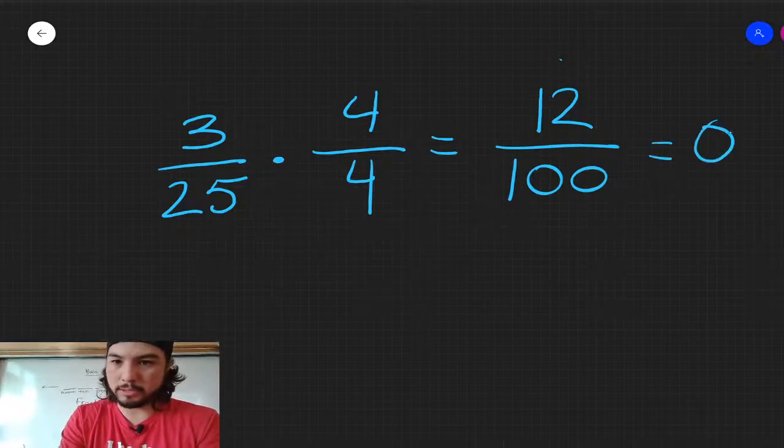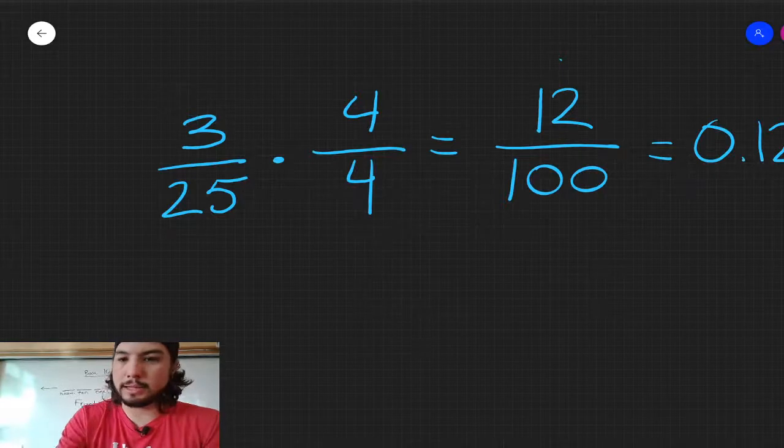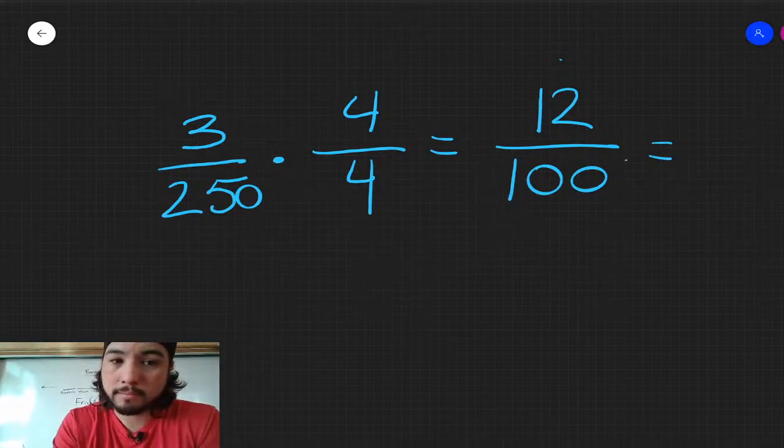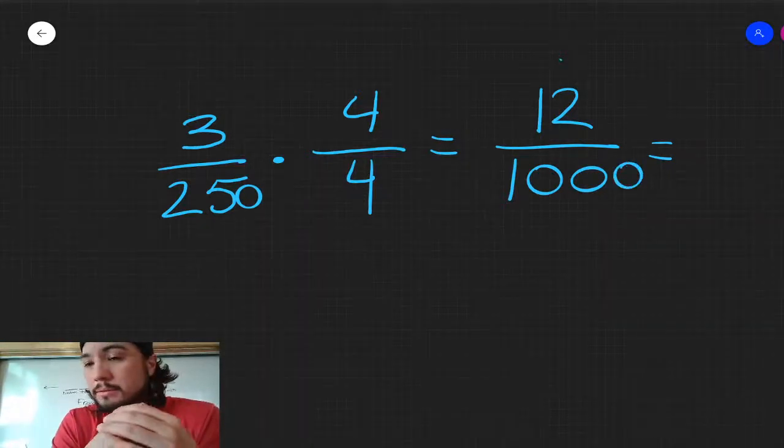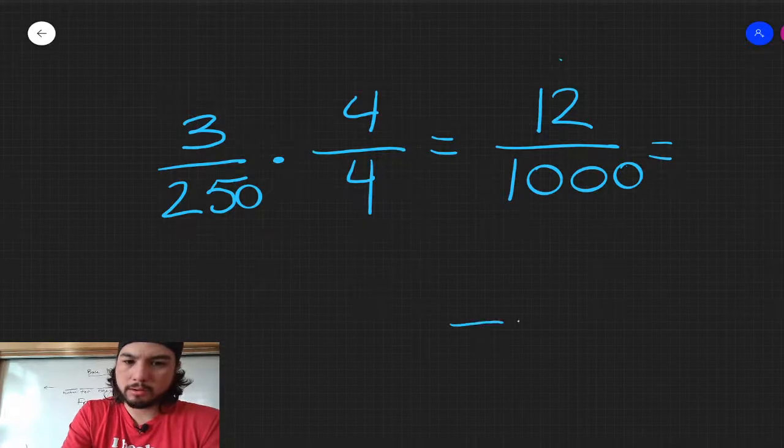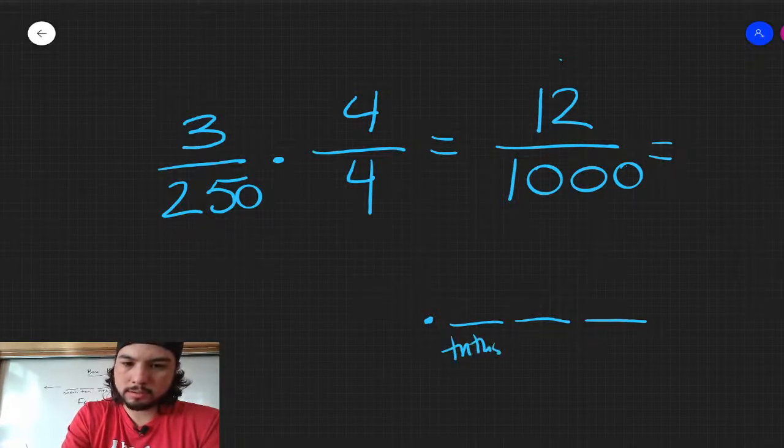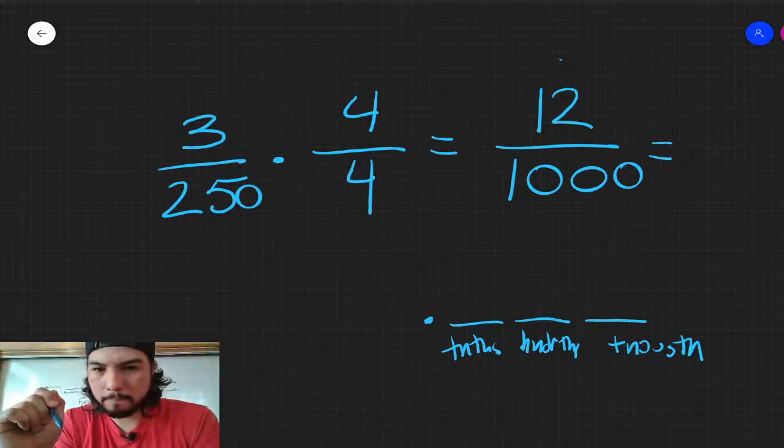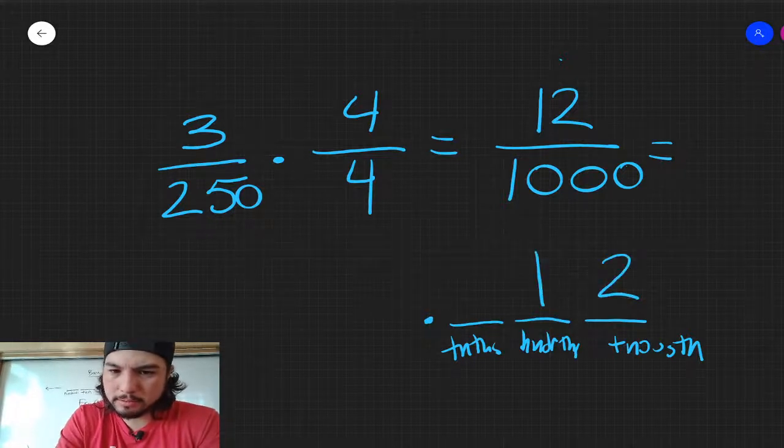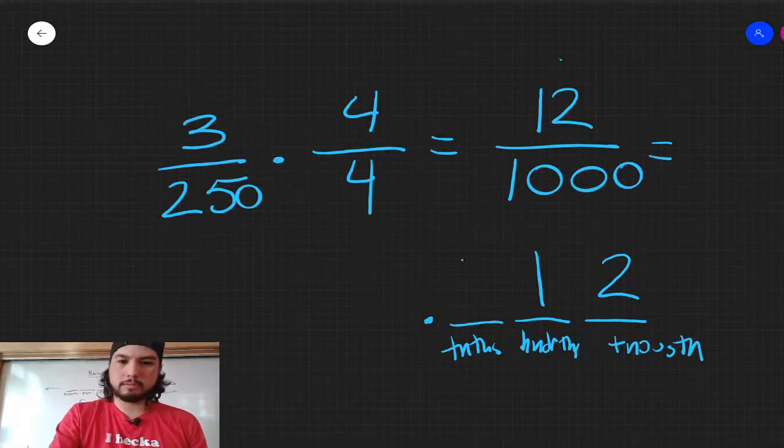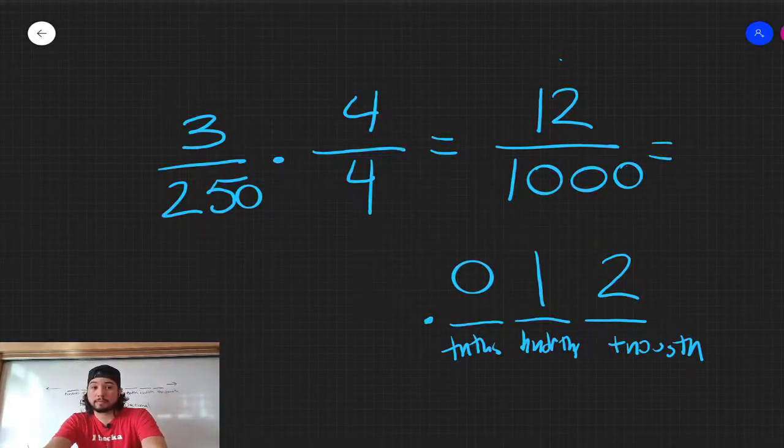This would be our decimal answer. Twelve in the hundredths place. If we had something like this, three 250ths times four making 12 thousandths. That's where it can get trickier. Because we've got to think about, okay, there's my tenths, hundredths, thousandths. Now I've got 12 thousandths. So it has to end in the thousandths place. And then we work backwards. Am I done? Now I've got an empty tenths place. So what do I need to put there? I'm going to put a zero there. That would be 12 thousandths.